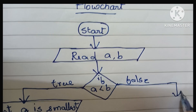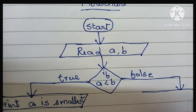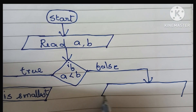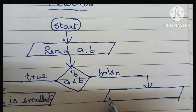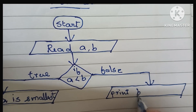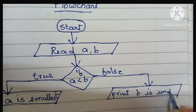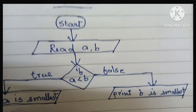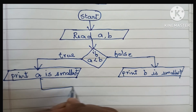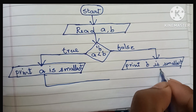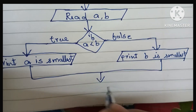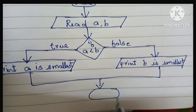...we have to print 'b is smallest'. Output is written within a parallelogram shape, so here we print 'b is smallest'. Finally, we have to stop the flowchart using the stop statement, which is written within an oval shape.